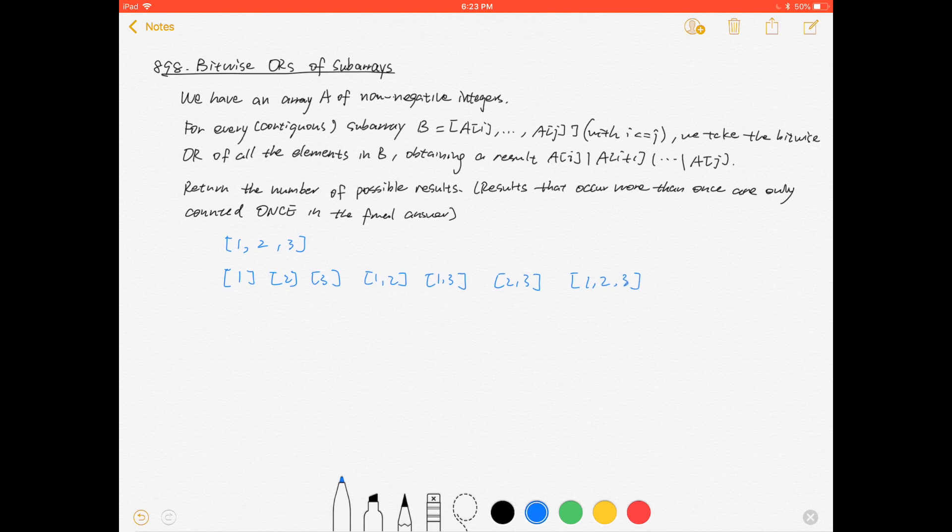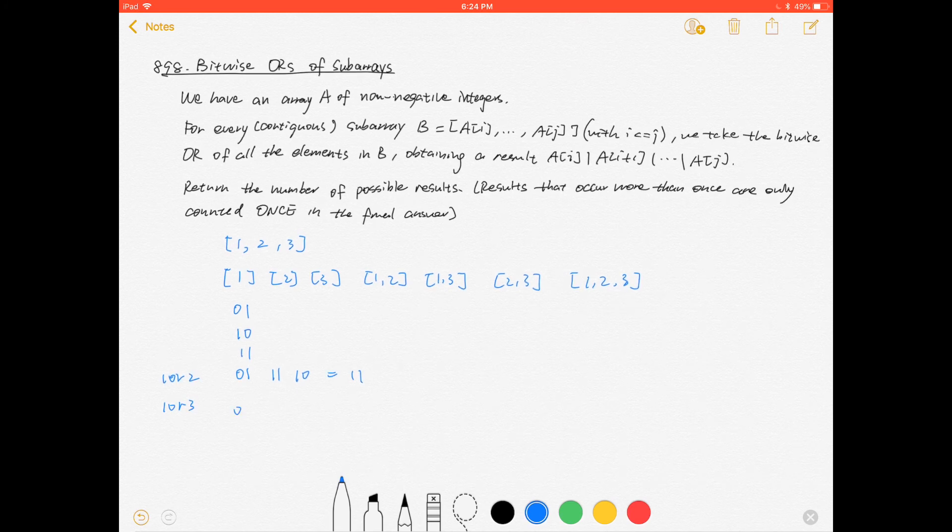For [1], the bitwise OR is 01. For [2], it's 10. For [3], it's 11. This already gives us three unique values. [1,2]: 1 OR 2 equals 11. [1,3]: 1 OR 3 equals 11.